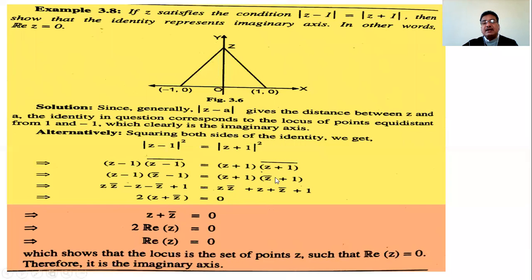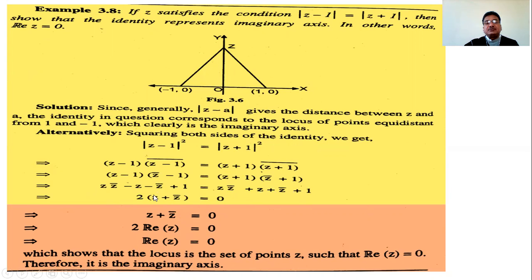So Z̄ - 1̄ = Z̄ - 1, and similarly Z̄ + 1̄ = Z̄ + 1. Expanding both brackets: Z·Z̄ - Z - Z̄ + 1 = Z·Z̄ + Z + Z̄ + 1. The Z·Z̄ terms cancel, and the +1 terms cancel, leaving -Z - Z̄ = Z + Z̄. Shifting terms: 2Z + 2Z̄ = 0.